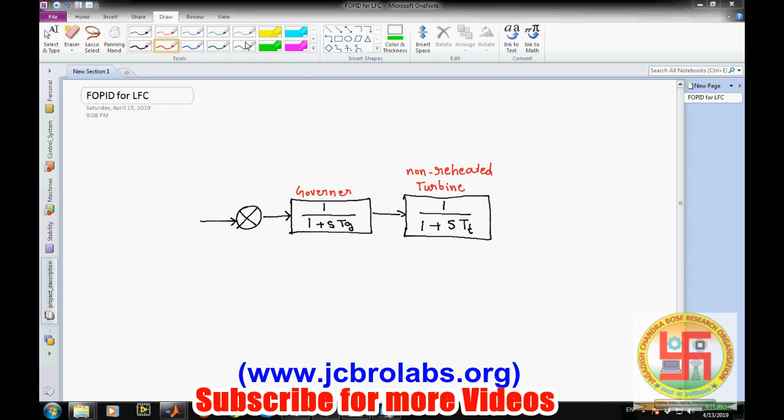Now then we have some disturbances, we can say load disturbances which can be provided here. That means there are variations in load. At last we have the power system, generally also known as the load. The transfer function is KP divided by 1 plus s times TP.